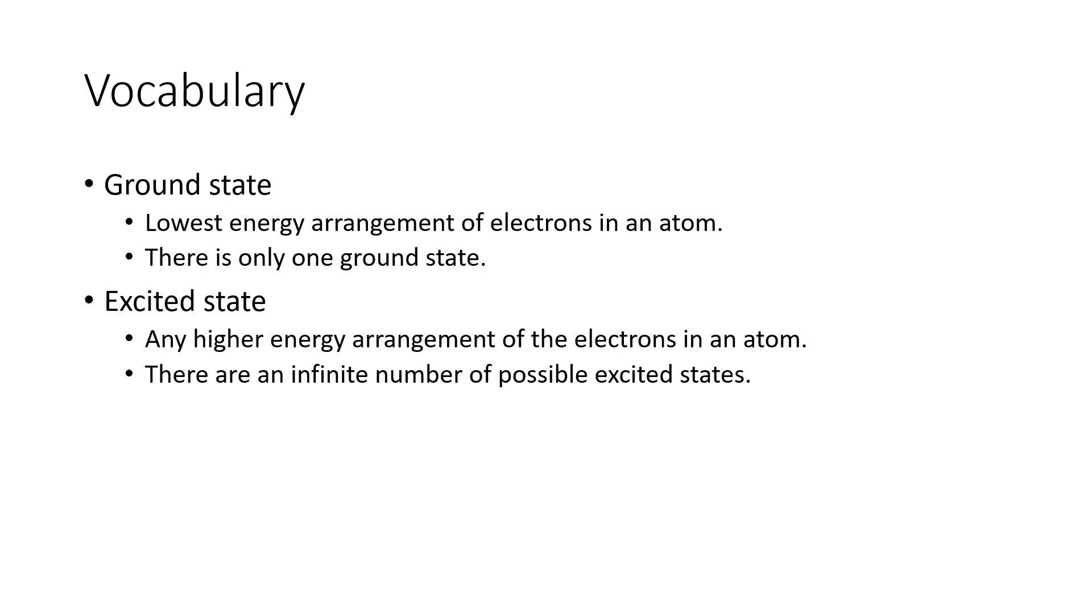Just a little bit of vocabulary. If all of the electrons in an atom are in the lowest possible energy arrangement, we're going to call that the ground state. And there is only one possible ground state for an atom. If even one of those electrons has been promoted to a higher energy level, we refer to that situation as being an excited state.